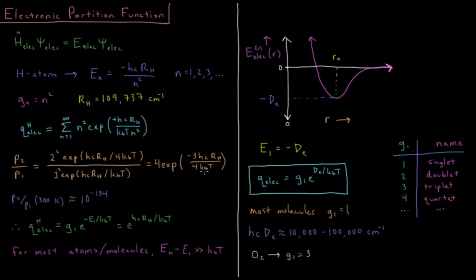If you actually compute what these values are, substitute in speed of light in centimeters per second, Planck's constant, Boltzmann constant, and say 300 kelvin, what you'll get is 10 to the minus 134. So it's 10 to the minus 134 times less likely to find the electron in the first excited state relative to the ground state.